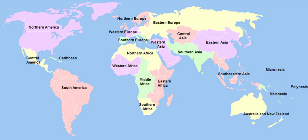Africa — see also UN Geoscheme for Africa. Subregions include: Northern Africa, Sub-Saharan Africa, Eastern Africa, Middle Africa, Southern Africa, and Western Africa.